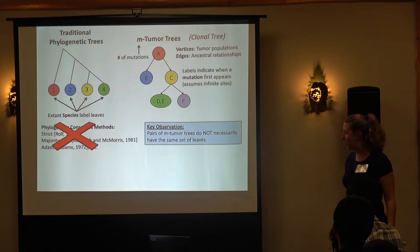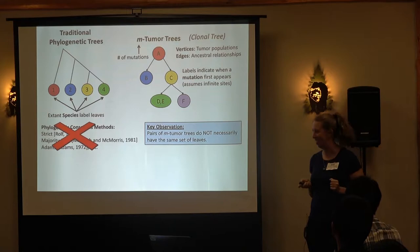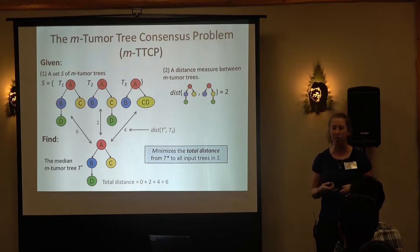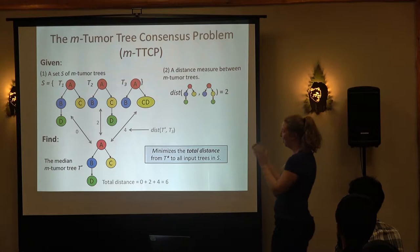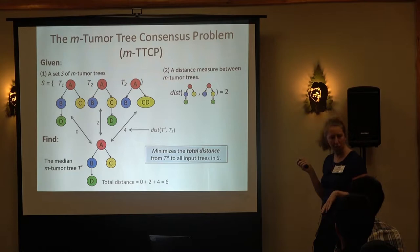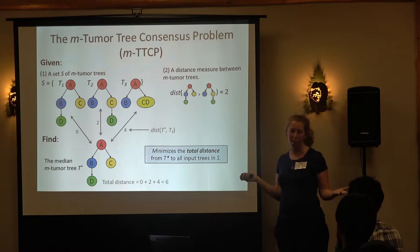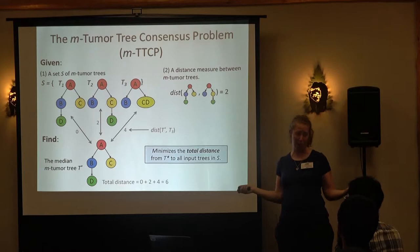As a computationalist, this is great — I've got a problem I can work on. One of the first things I think about is how do I actually formulate this as a clean computational problem. We define this as the M-tumor tree consensus problem (MTTCP): given a set S of M-tumor trees and a distance measure between them, what we want to find is a median tree — a tree that minimizes the total distance to all input trees. A well-defined input/output that anyone in computer science could work on.